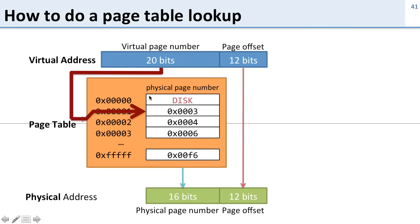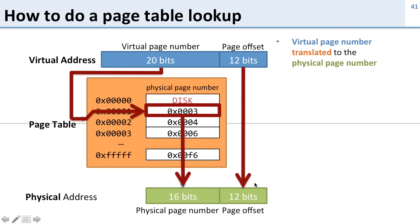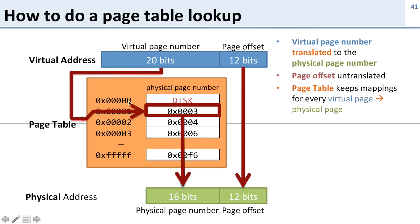So let's take a look at how this works. We take our virtual page number, find our entry, and that entry gives us our physical page. For the page offset, we don't change anything — it just goes through. So: virtual page translated to physical page, page offset untranslated. The page table needs to keep a mapping for every virtual page number. This is why it's important that we use pages — now we have a million entries here instead of having a billion entries.